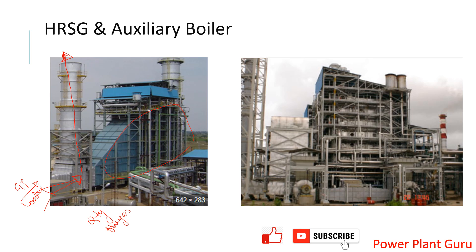On the right side you can see the auxiliary boiler, also called a utility boiler. In this boiler there are no hot gases or waste heat sources available — it is based on the requirement of the process or steam. Most of the cases you will find a forced draft system, otherwise a balanced draft system. With a forced or balanced draft system, the operator has the liberty to maintain the draft, excess O2, and air-to-fuel ratio — everything is in the operator's control.